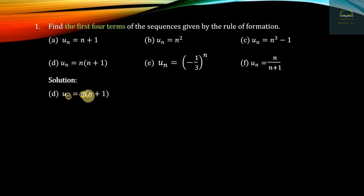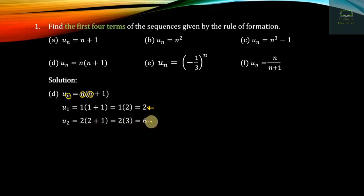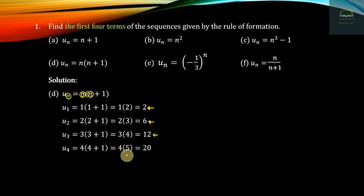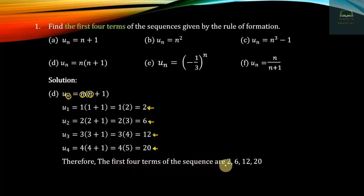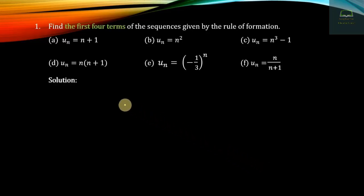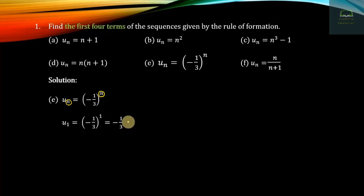Now for the next sequence, u1 = 1 plus 1, u2 = 1 plus 2 times 2 equals 3, u3 = 2 plus 3 equals 6, u4 = 3 plus 4 plus 1 equals 5 times 4. Therefore the first four terms of the sequence are 2, 6, 3, 20. The general formula involves minus 1 by 3 to the power n.